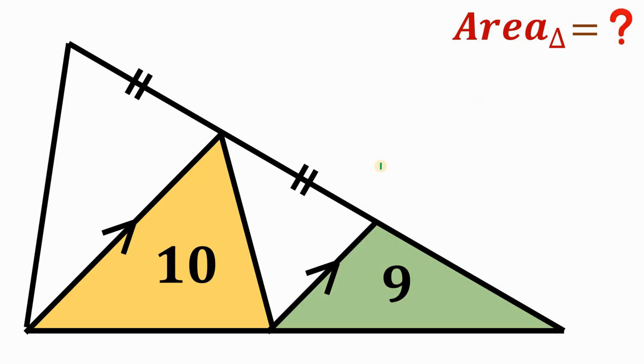Alright, so first, what we're going to do in this kind of problem is to use all the given information. So what are the given information? We are given areas, which is 10 square units and 9 square units. We're also given that these two segments are equal. And we also have the given that we have parallel segments.